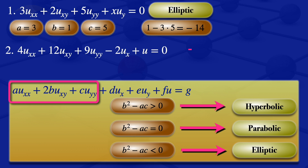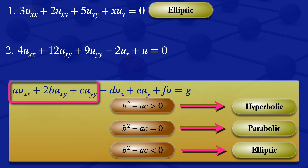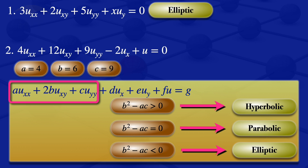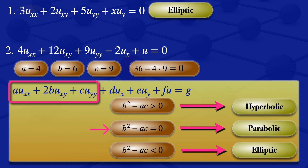Now looking at the second partial differential equation and comparing it with the general form, we see that a is 4, b is 6, and c is 9. Evaluating b squared minus ac: 6 squared is 36, minus 4 times 9 which is also 36, giving us 36 minus 36, which equals zero. Since b squared minus ac equals zero, we conclude that this partial differential equation is parabolic.